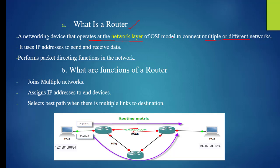A router is a networking device that operates at the network layer of the OSI model to connect multiple or different networks. Basically, a router works at the network layer of the OSI model. And the main function of a router is to connect multiple networks. For example, if we have a switch in between these separate networks and remove all the routers, replacing with only one switch, they will not communicate because a switch cannot do routing unless it's a layer 3 switch. A router uses IP addresses to send and receive data, while a switch uses MAC addresses.